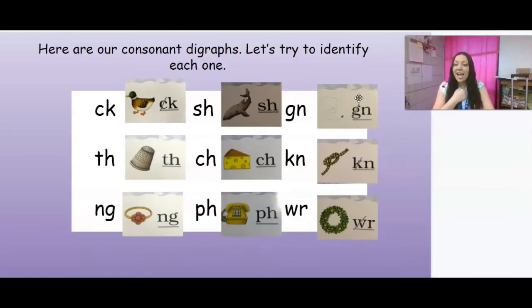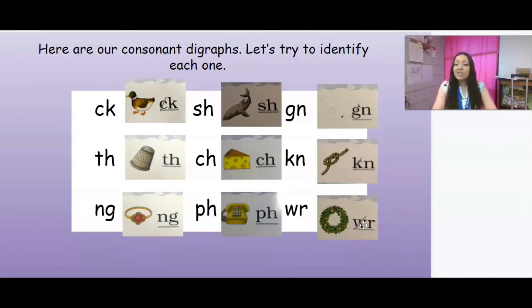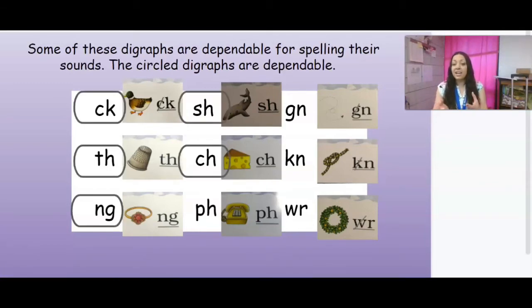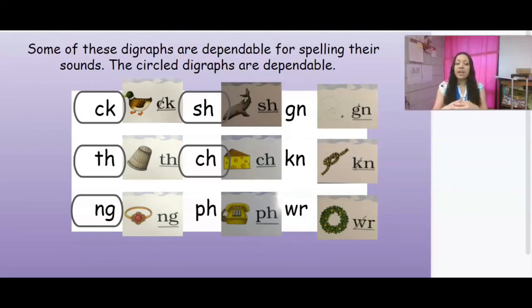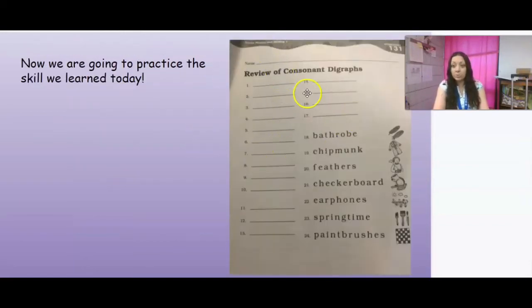The circled digraphs are dependable — this means you can always depend on them to make that sound. C-K always says 'k,' T-H always says 'th' or 'th' (voiced), N-G always says that nasal sound, S-H always says 'sh,' and C-H always says 'ch.' The other ones, remember, sometimes might make a different sound. Let's pull out our activity sheet so we can practice reviewing our consonant digraphs.